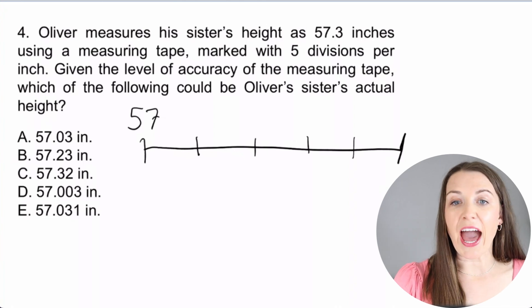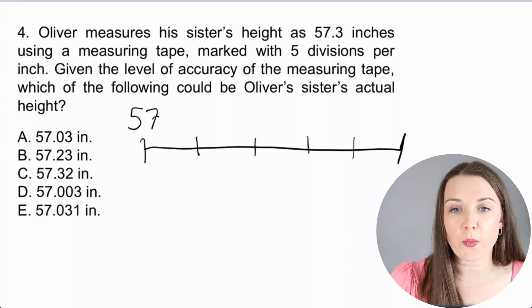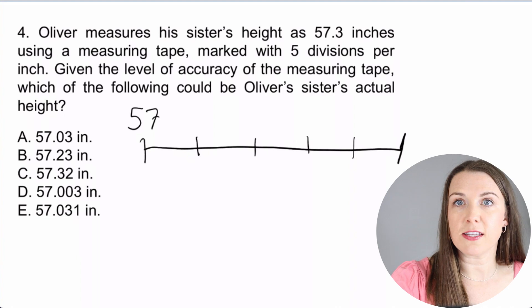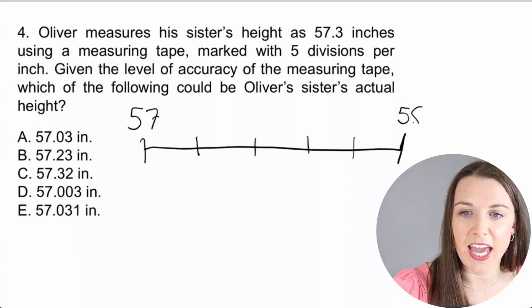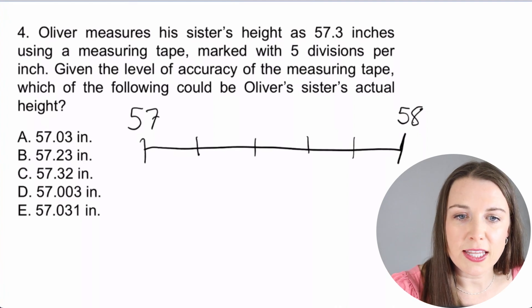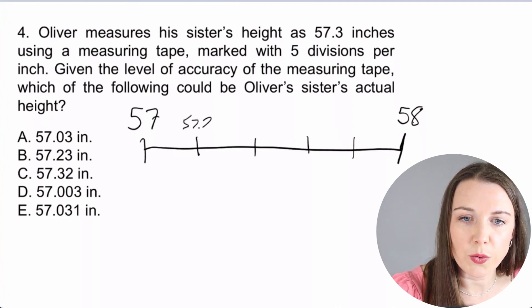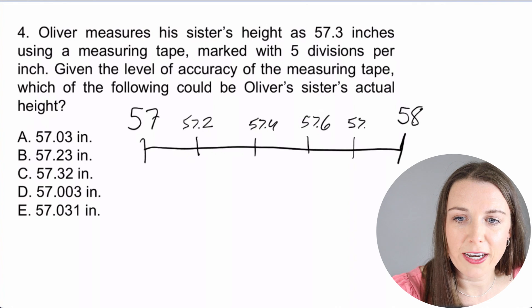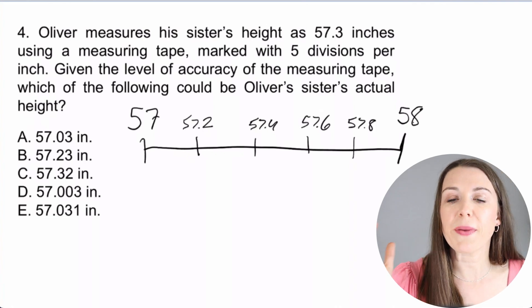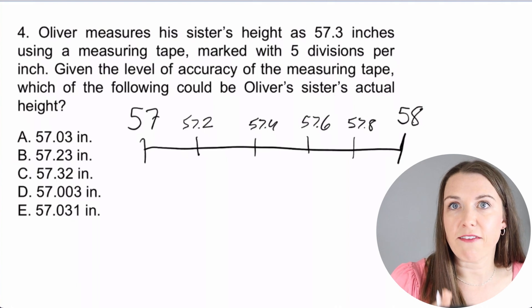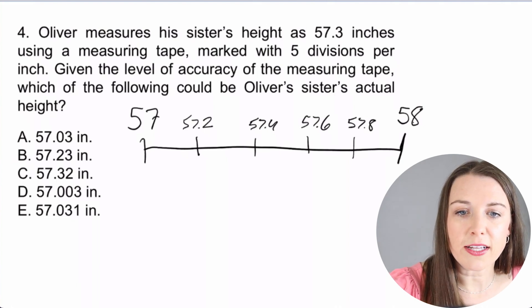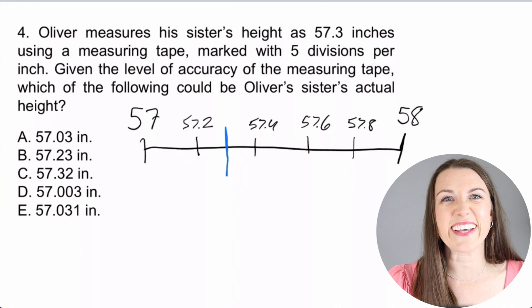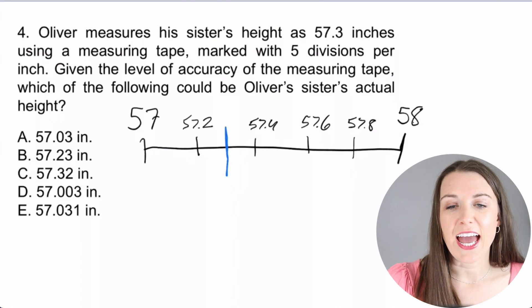Now, it says, given the level of accuracy of the measuring tape, which of the following could be Oliver's sister's actual height? So when we look at a measuring tape, right here, this is the 57, right? And over here, it becomes 58. So if it's broken into five different spots, this one is going to be 57.2, 57.4, 57.6, 57.8, and then on to the 58. But he measured it as 57.3. So that's going to be right here that he measured it. But you can see there's not a mark there. So he couldn't tell exactly if it was on the mark or not.